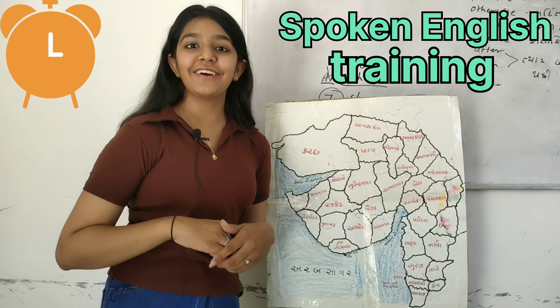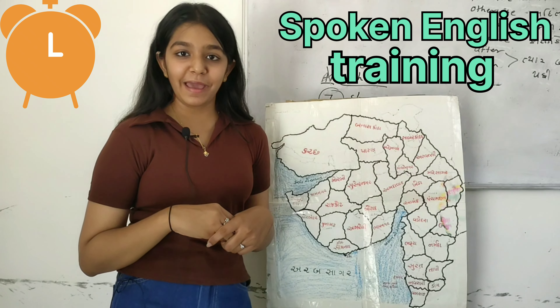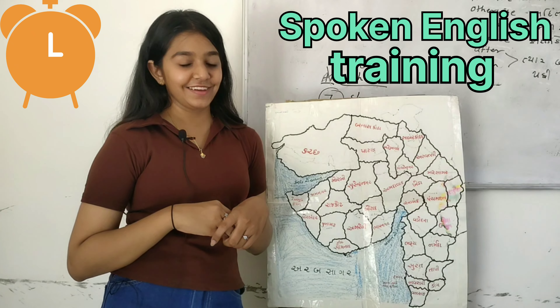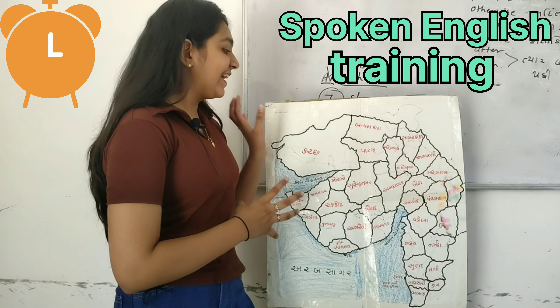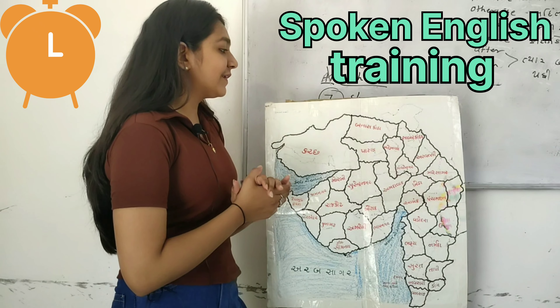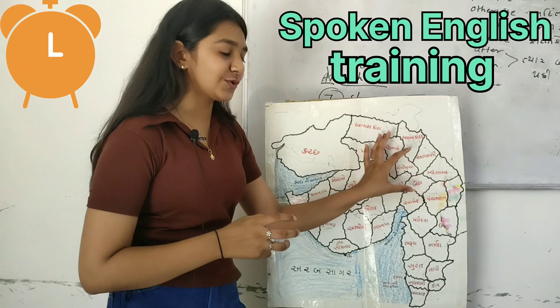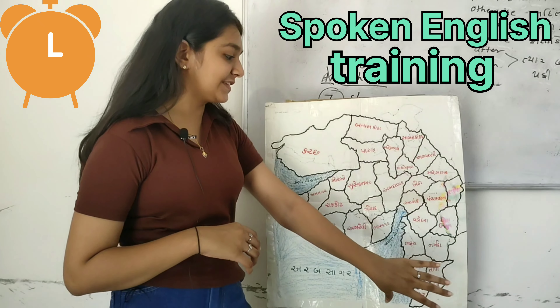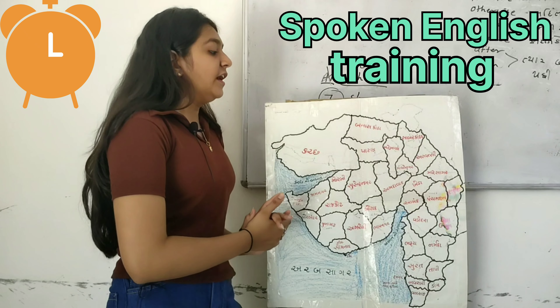Hello, today I will describe our map of Gujarat. This is Gujarat. There are three parts of Gujarat: this is North Gujarat, this is South Gujarat, and this is Saurashtra.